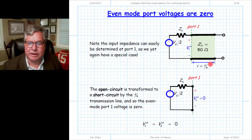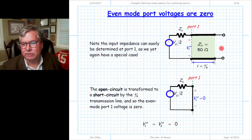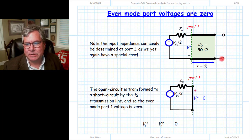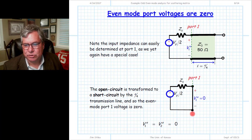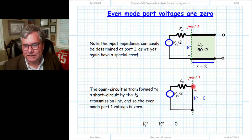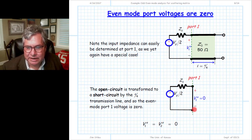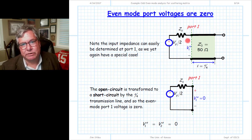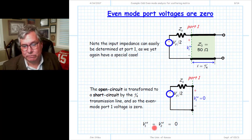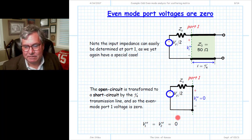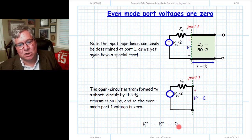A quarter-wavelength transmission line terminated in an open circuit transforms that open circuit into a short circuit at the input. So the input impedance is zero - a short circuit. By definition, a short circuit has zero voltage across it, so the even mode voltage at port one is zero volts. The even mode voltage at port two equals the even mode voltage at port one, so it is also zero.